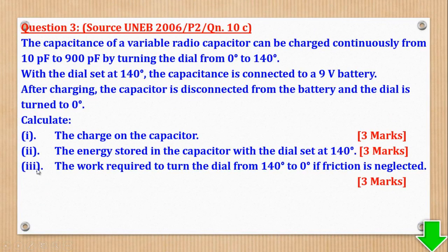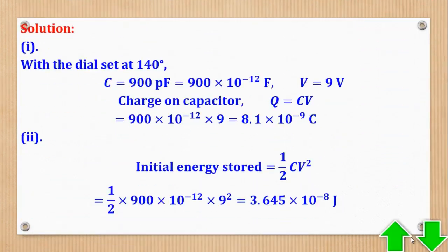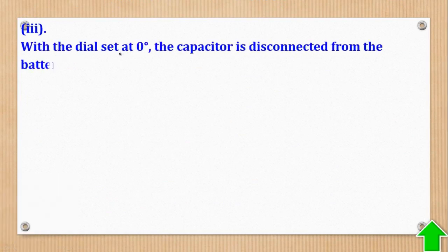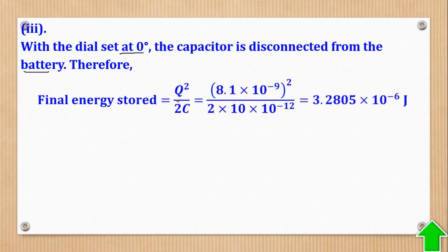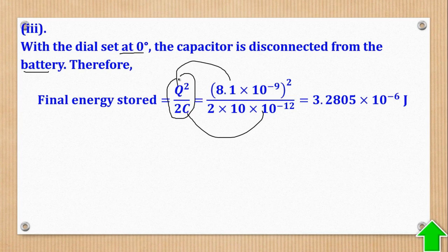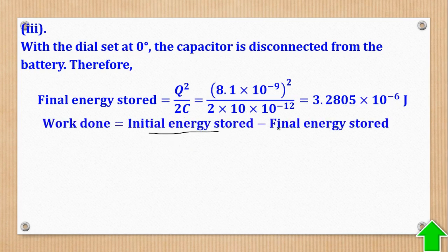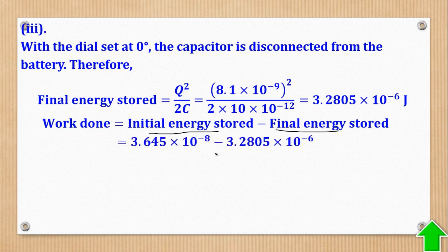For Roman 3, the work required to turn the dial from 140 degrees to 0 degrees if friction is neglected. With the dial set at 0 degrees and the capacitor disconnected from the battery, the final energy stored is given by Q squared over 2C — using the same charge Q but now with capacitance at 0 degrees (10 pF). We use this formula because the capacitor was disconnected from the battery, so there is no V in the expression. Work done equals initial energy stored minus final energy stored; subtracting the two gives the answer.